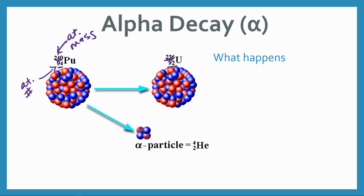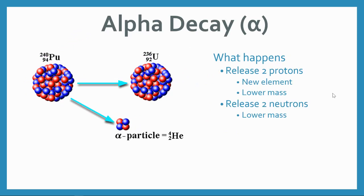We started out with 240 particles in the nucleus and we're down now at the end to only 236. So we lost four things. Two of them were the protons. The other two are the two neutrons. So if we add up all of these particles, these 236 subatomic particles and these four subatomic particles in the alpha particle, we get that total 240 that we started with.